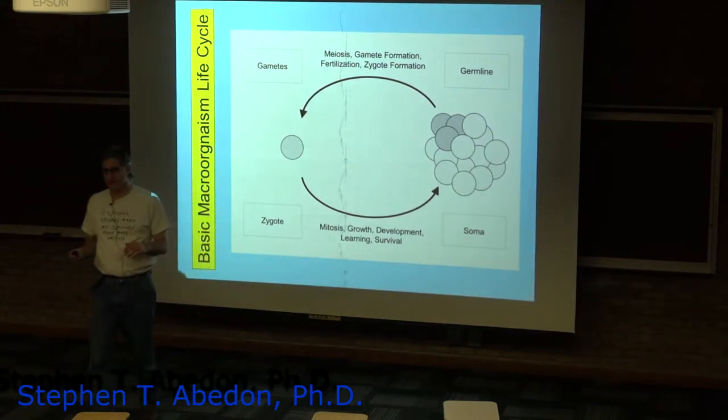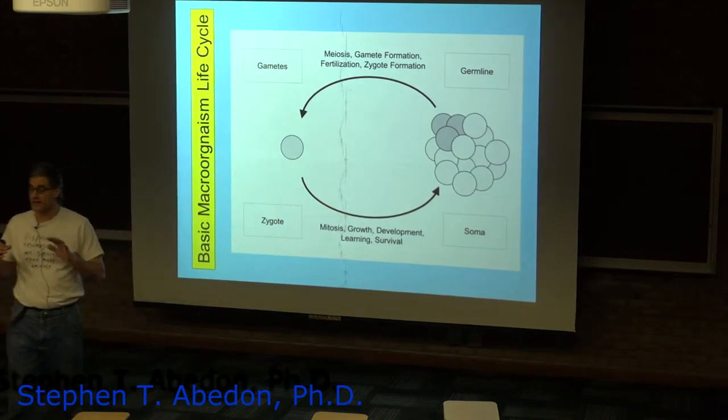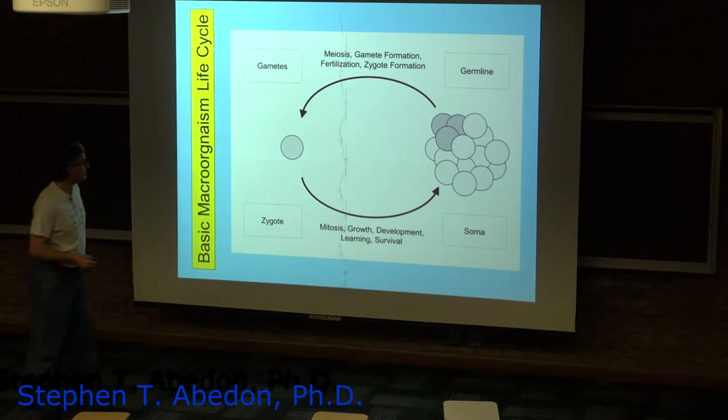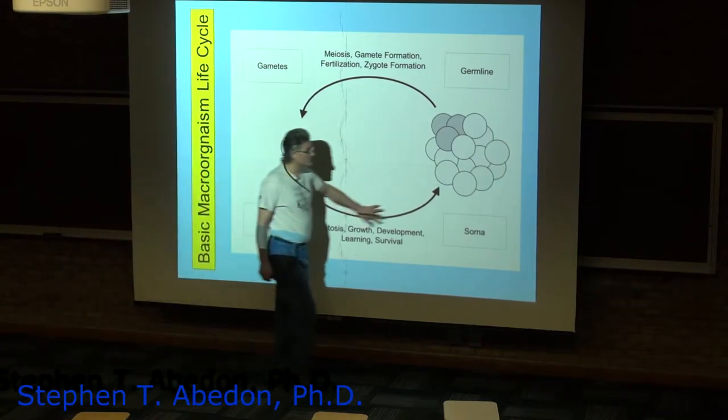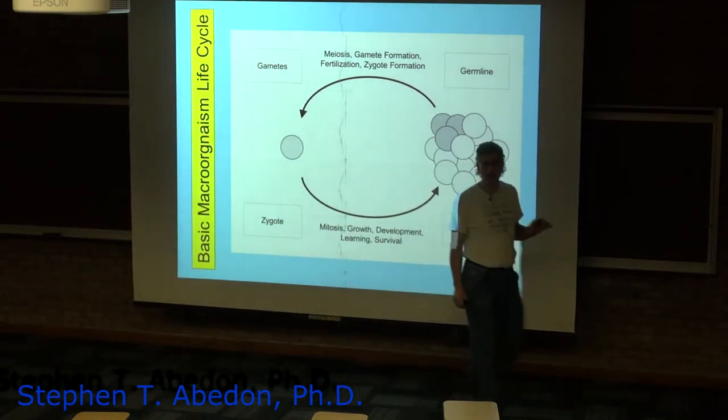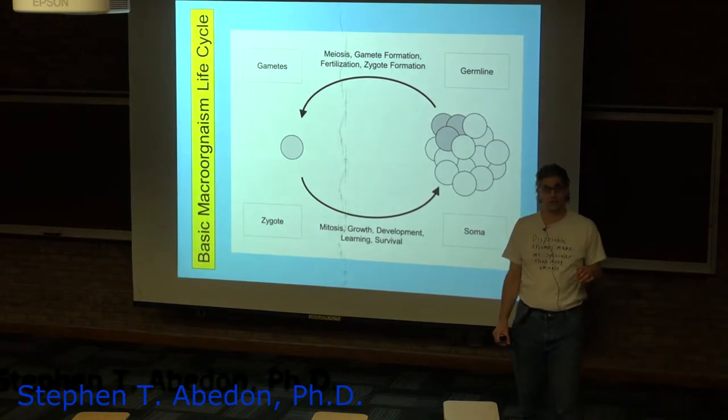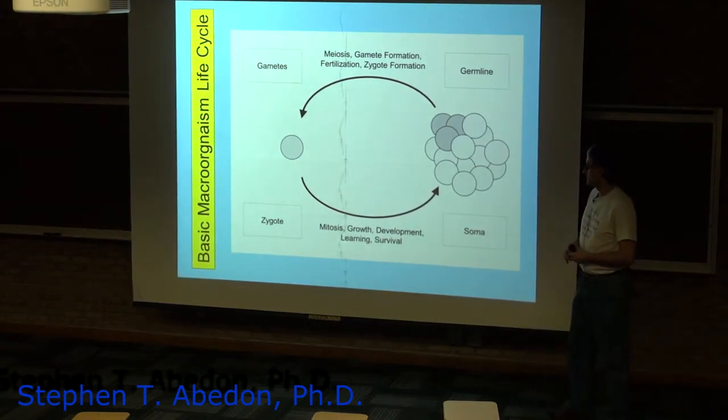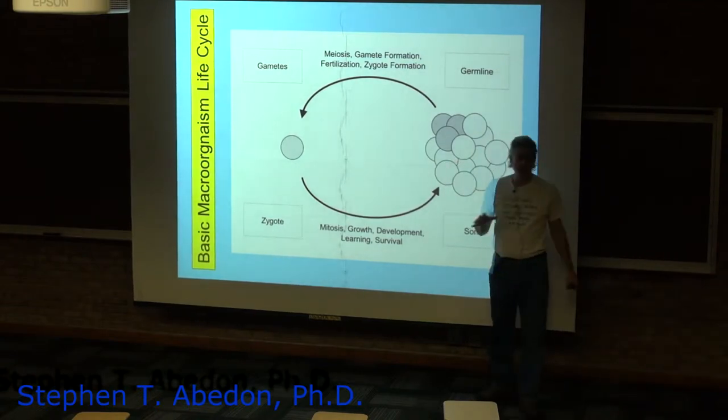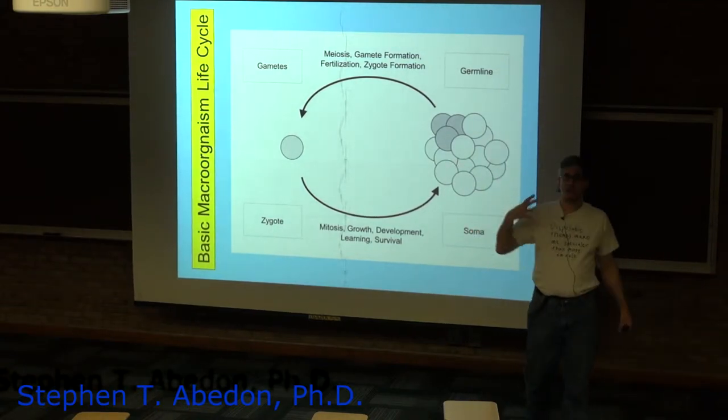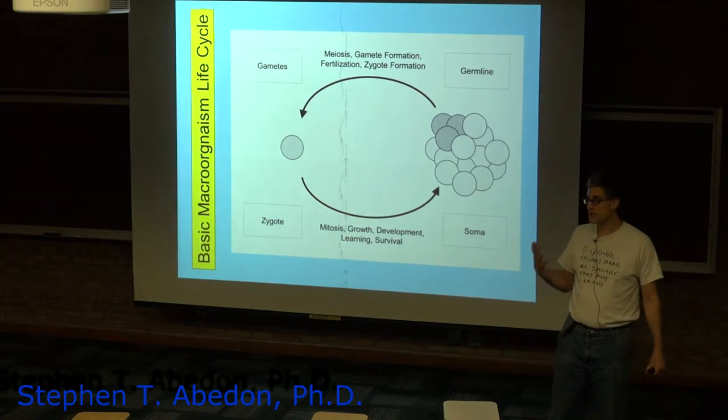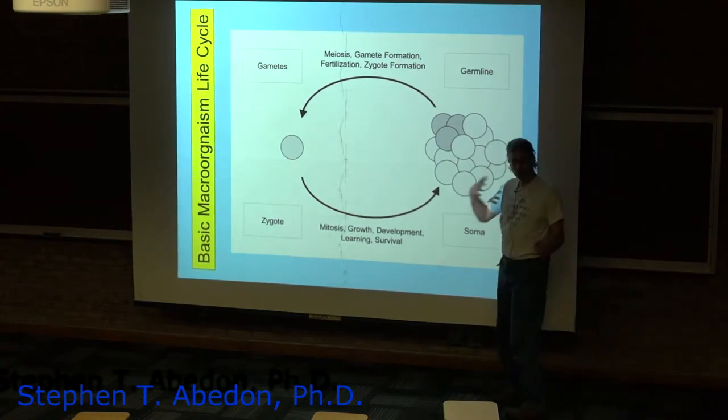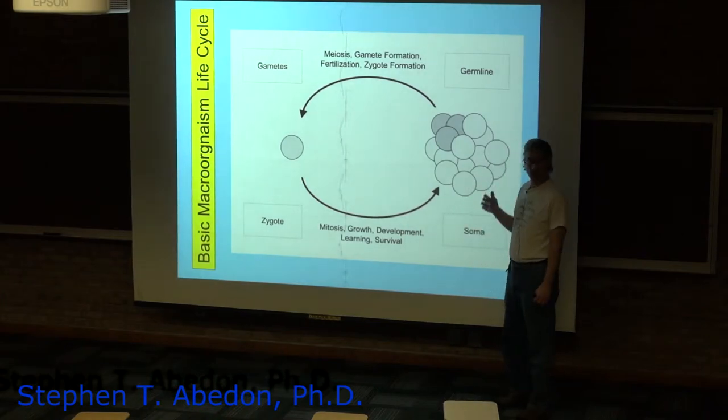one of the things that is established when you go through a single cell state is that all of the resulting cells in the multicellular organism are genetically identical, because they're all produced mitotically, except for occasional mutations. And so, as a consequence, the survival and reproduction of any one of those cells is equivalent to the survival and reproduction from a genetic perspective of any of those cells.